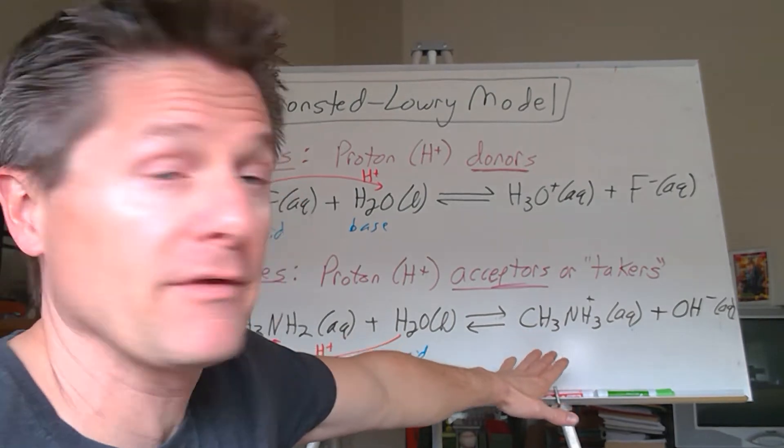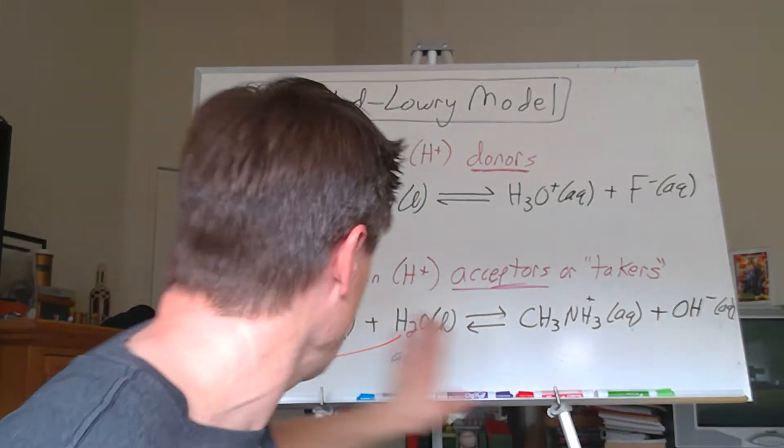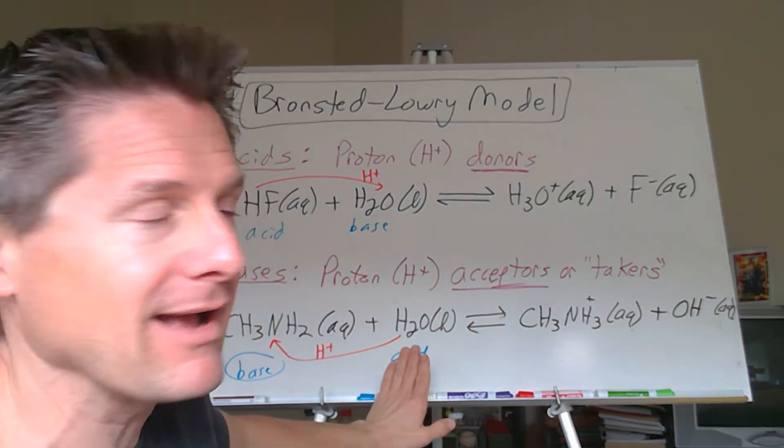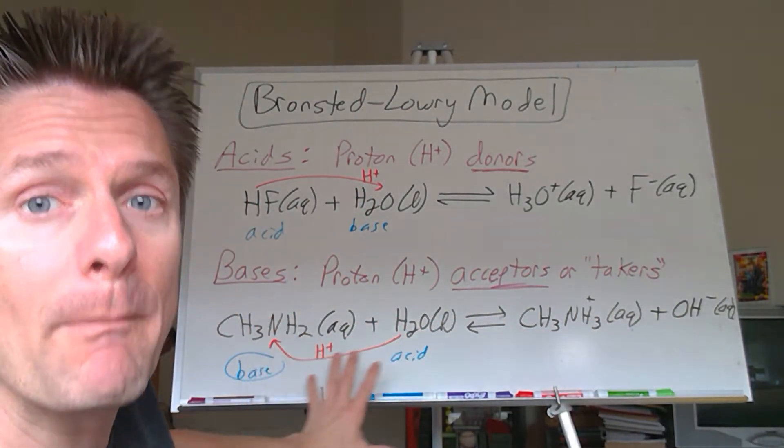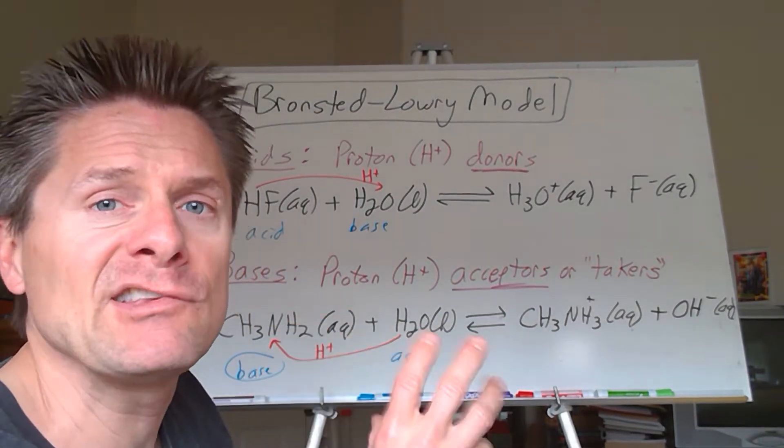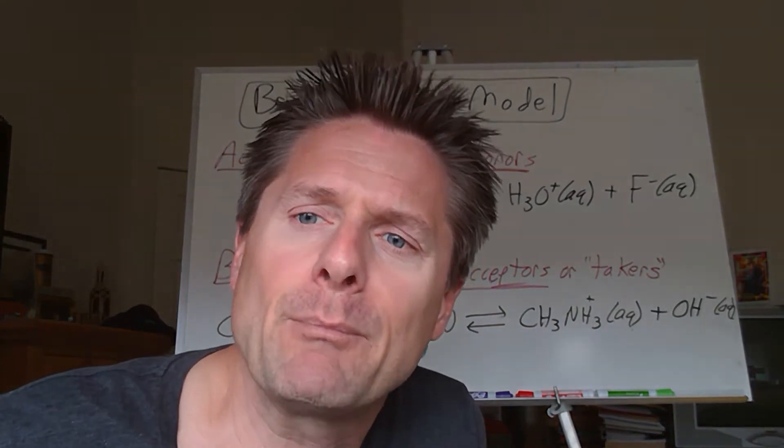You get the hydroxide ion. So Svante Arrhenius would look at this and go, oh, that qualifies as an Arrhenius base. This does, because it forms OH-, but not really obvious, like the sodium hydroxide example. But you can see how powerful the Bronsted-Lowry model is for identifying acids and bases. And this is what we predominantly use in general chemistry. So let's take a look at the last one, the Lewis model, which is more organic, but hopefully you can see the overlap between these.